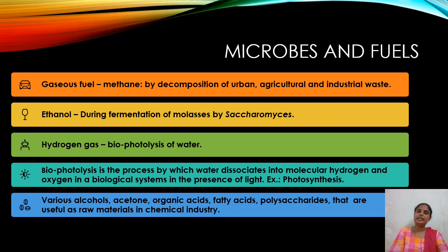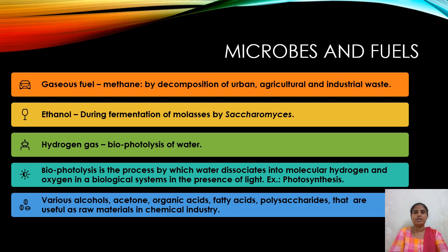Not only fuel — many industrial chemicals are also produced by microbial processes, like alcohols, acetone, and many organic acids. Many fatty acids and polysaccharides used as raw materials in industry are also produced by various microbial processes.